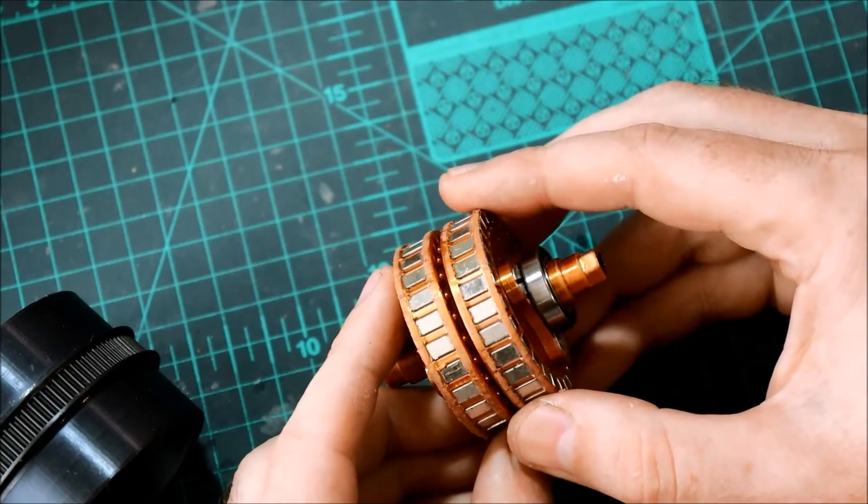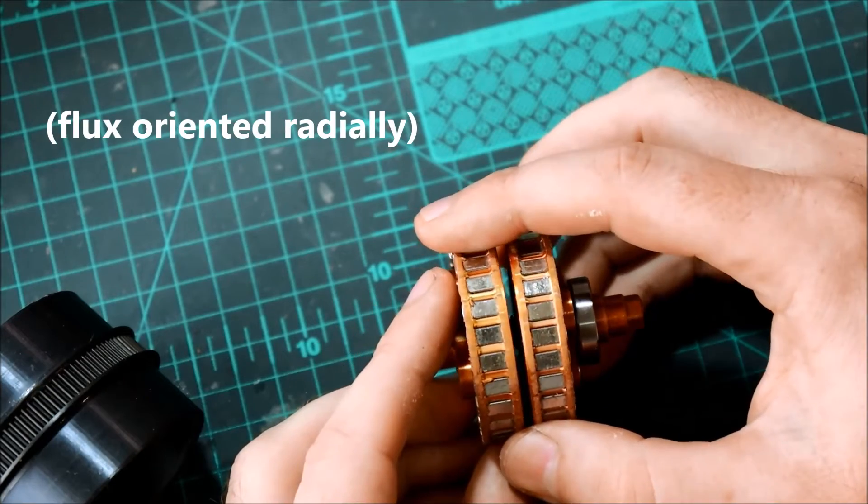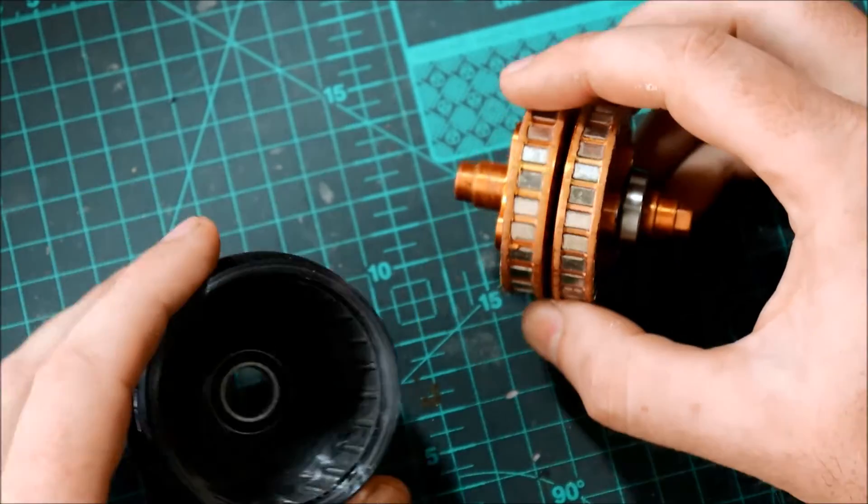And this is of course not all there is to a magnetic gear. You also need a way to couple the flux from one side to the other side. And that is where the housing comes in.